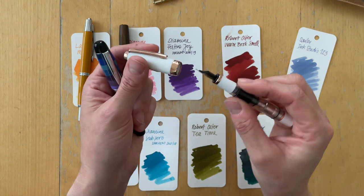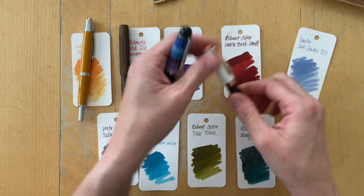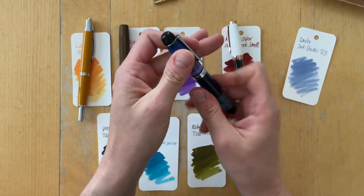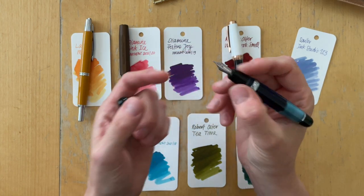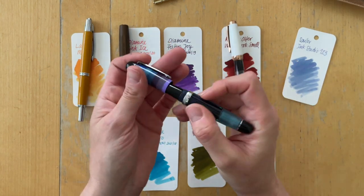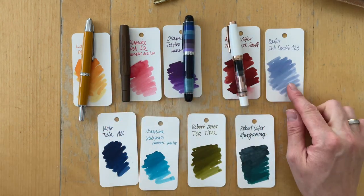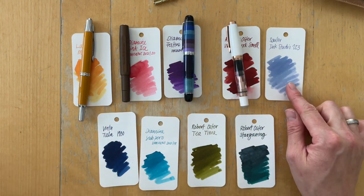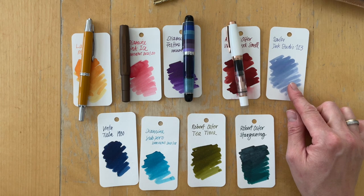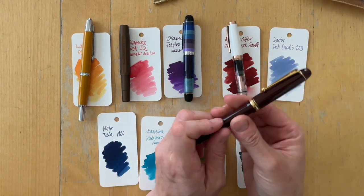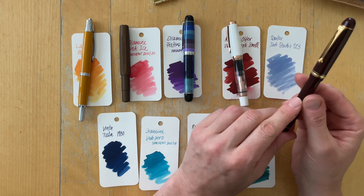The grip section on this one is even wider than the grip section on the Coloro that I showed you before. Then I put the Sailor ink studio one two three into the Custom 74.